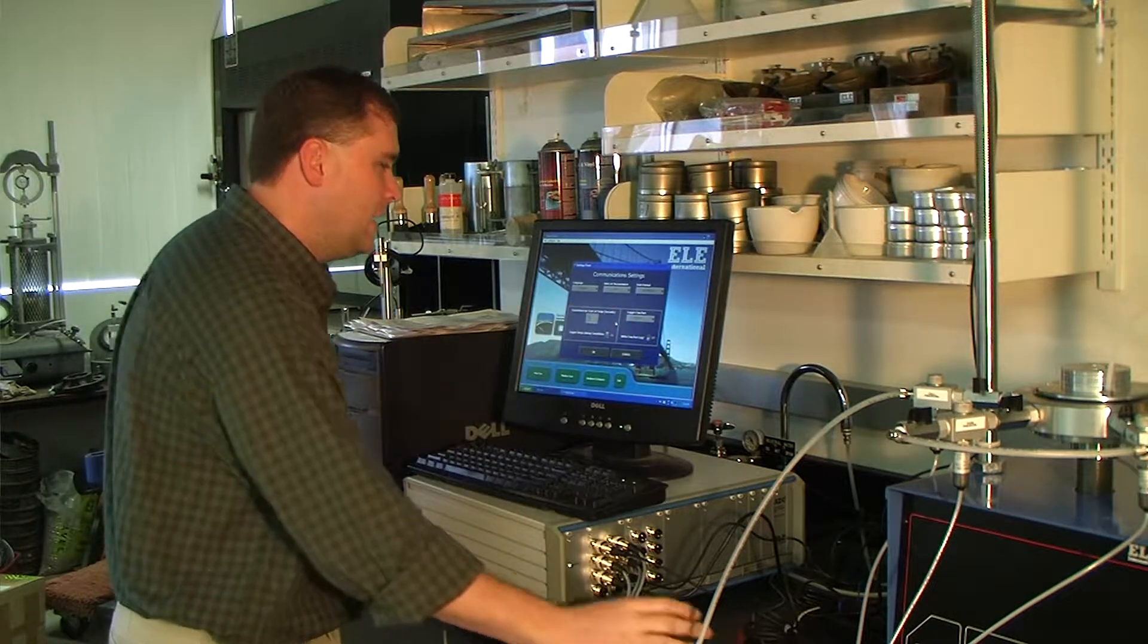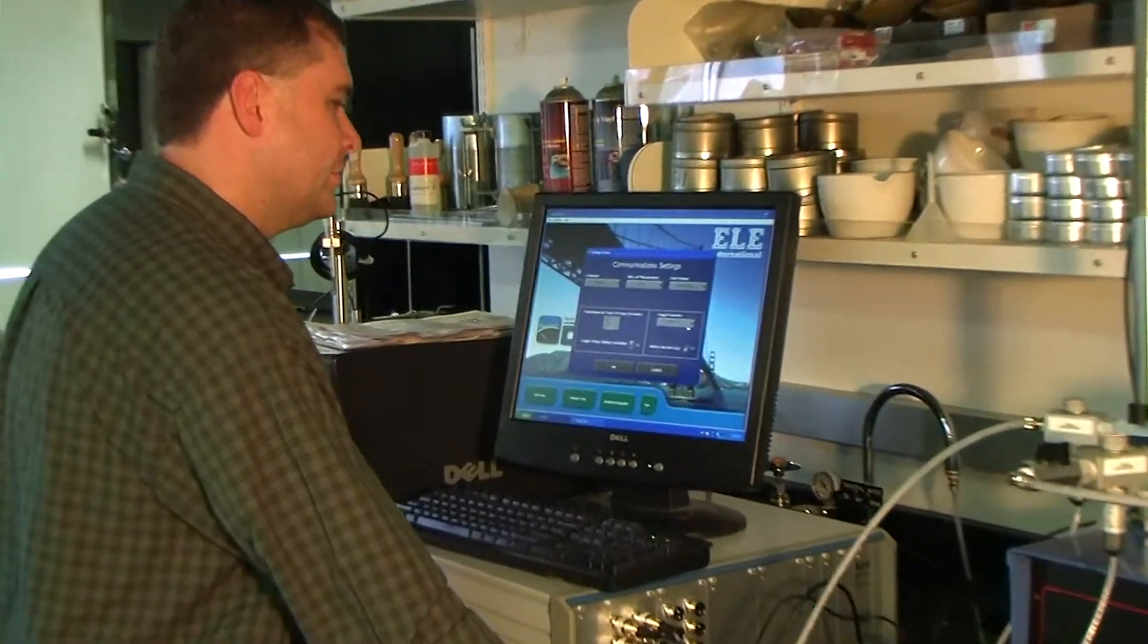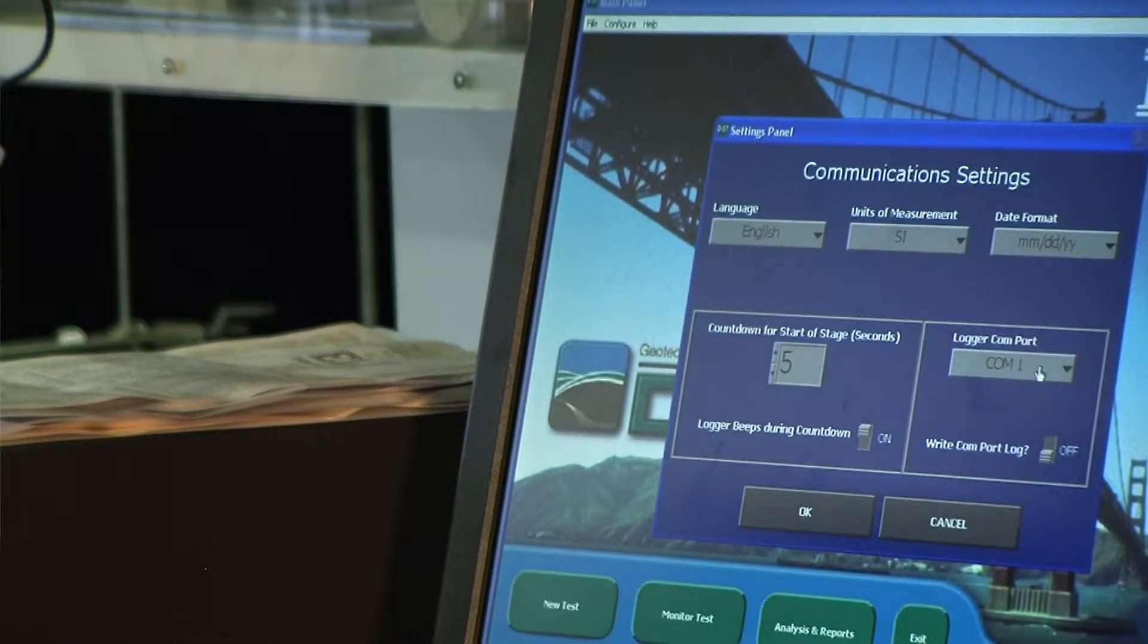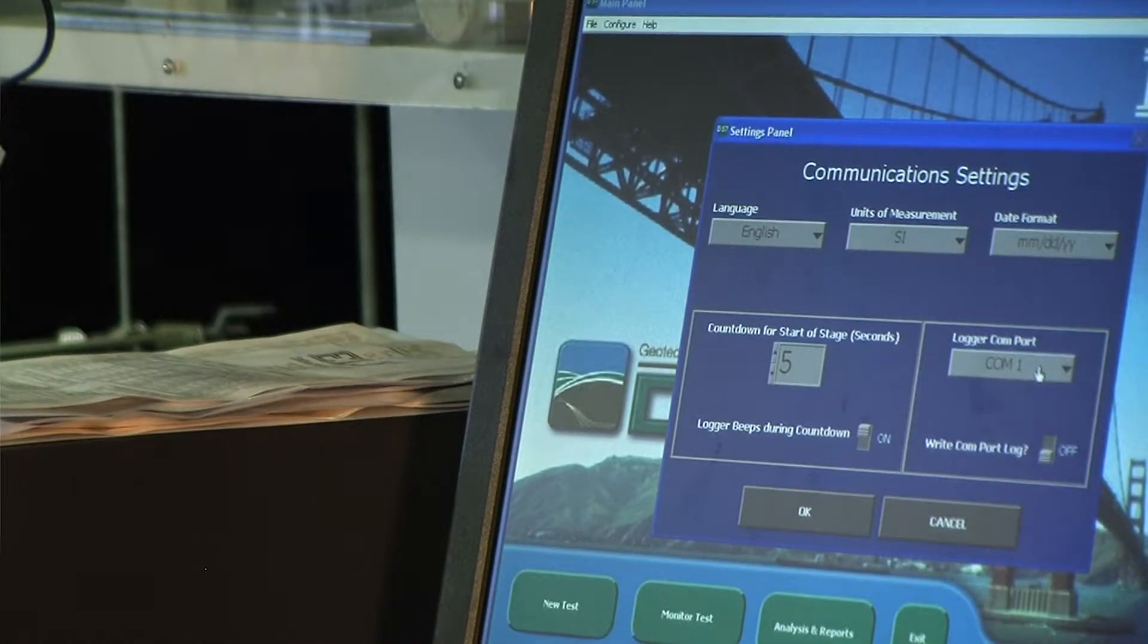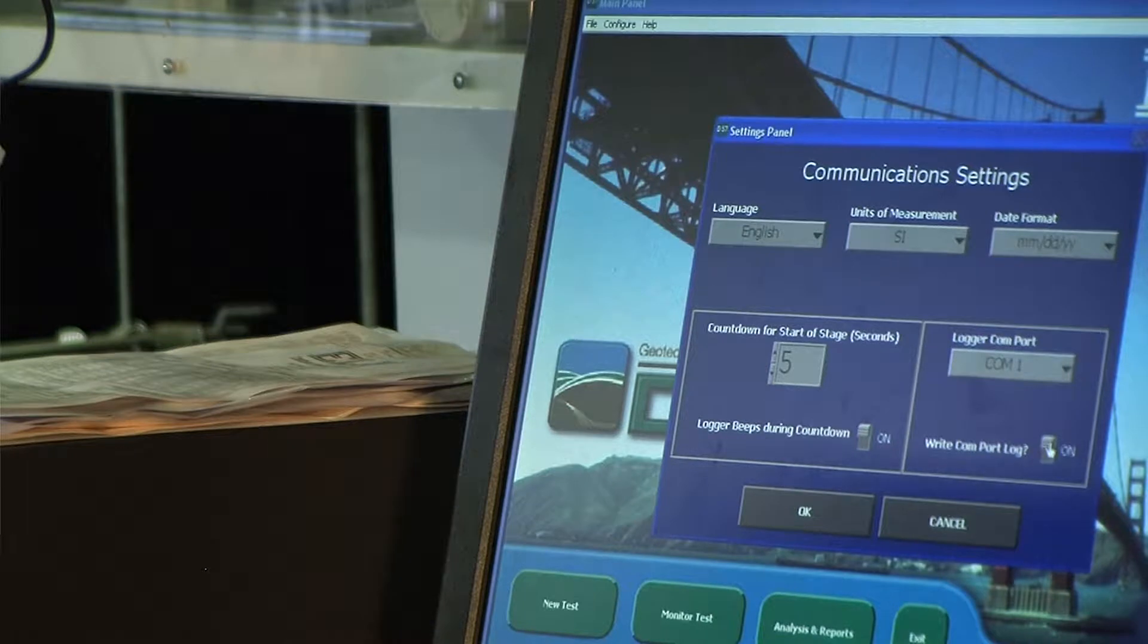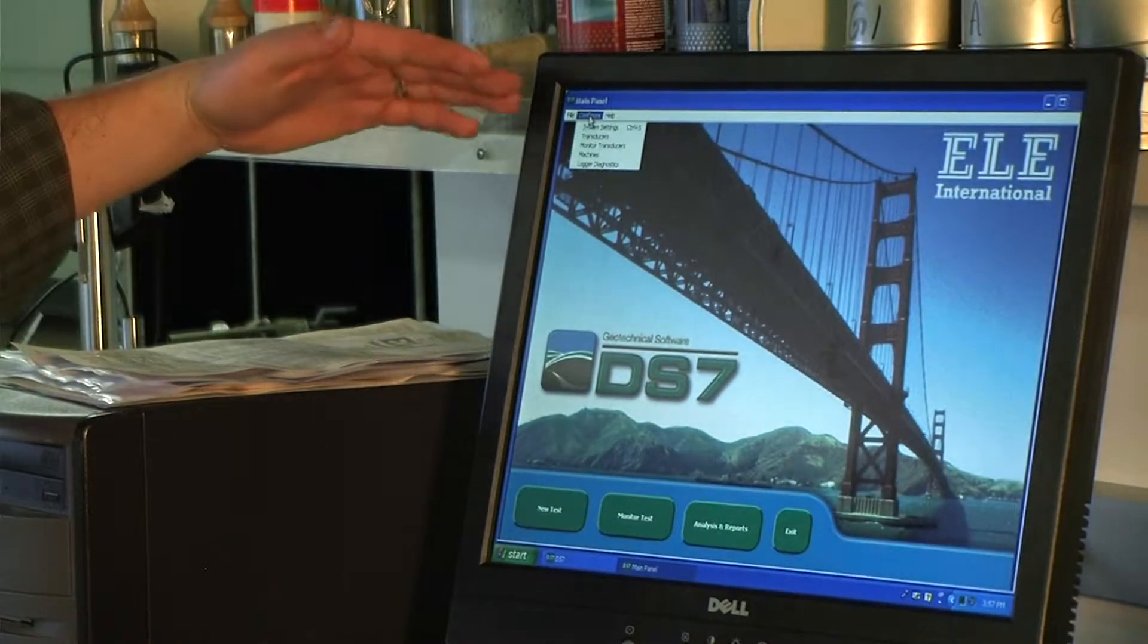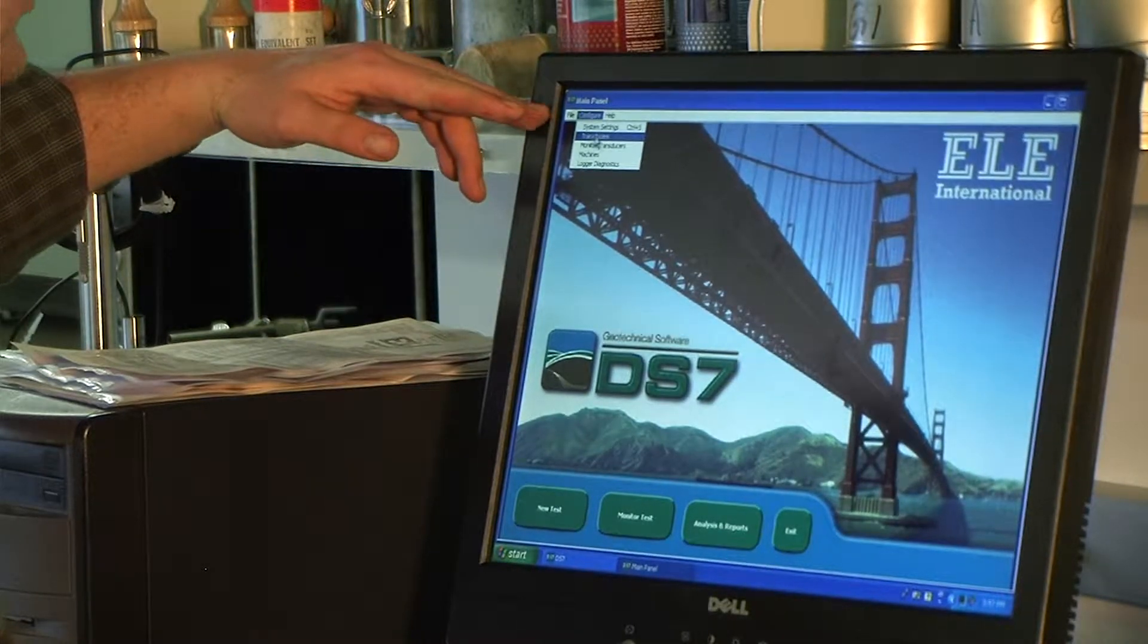The one on the right here is if you have communication errors or communication issues, you can change which port on the computer that the ADU is connected into. You can also write a log for the communication port between the ADU and the software itself. That's used for troubleshooting if necessary. So I'll click OK. We'll just keep it as is. Go back to configure. That was system settings. The next one we'll look at is transducers.